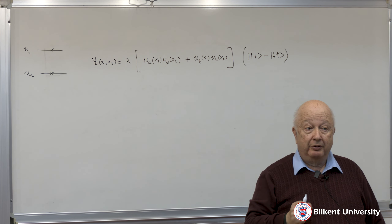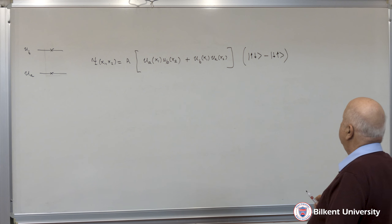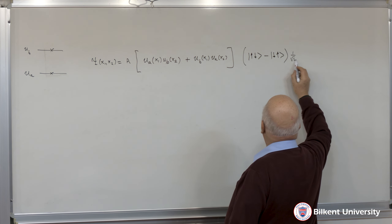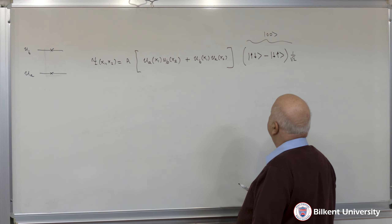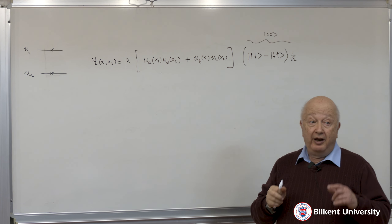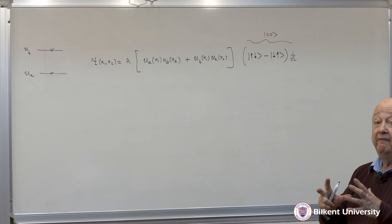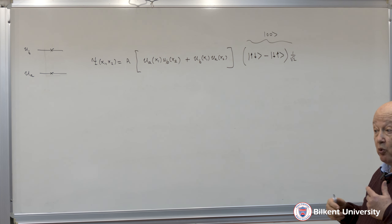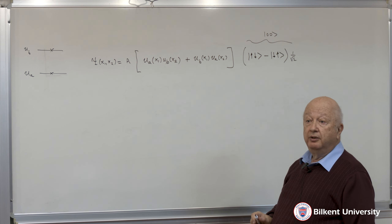Now you see why total angular momentum states are going to be very useful. This term here — with its normalization — is the singlet state. So I can have a symmetric space wave function for two electrons provided that they are in the singlet state.